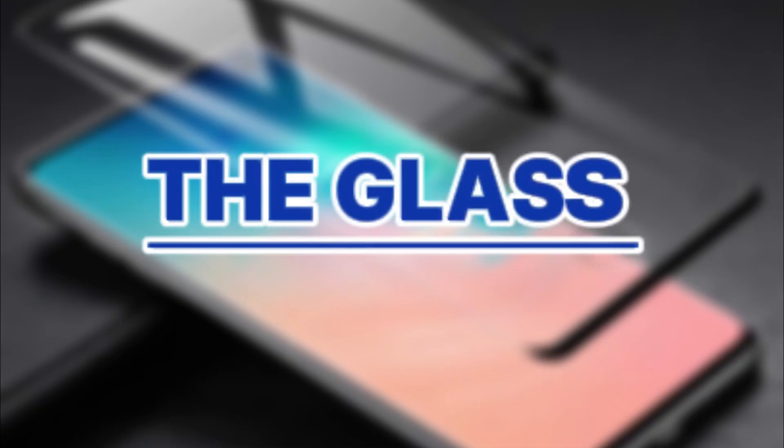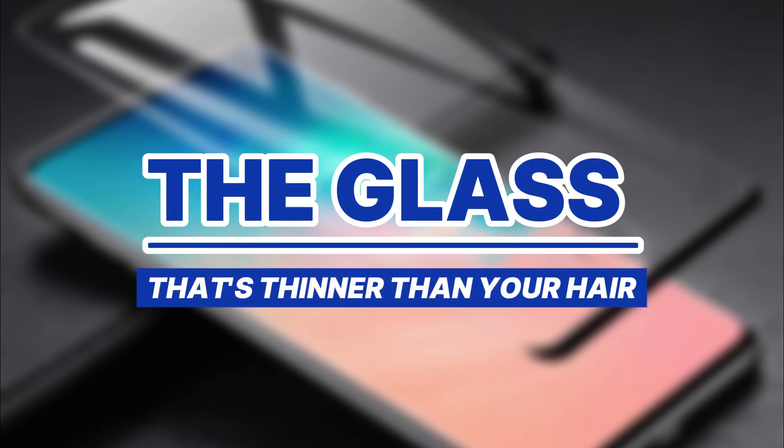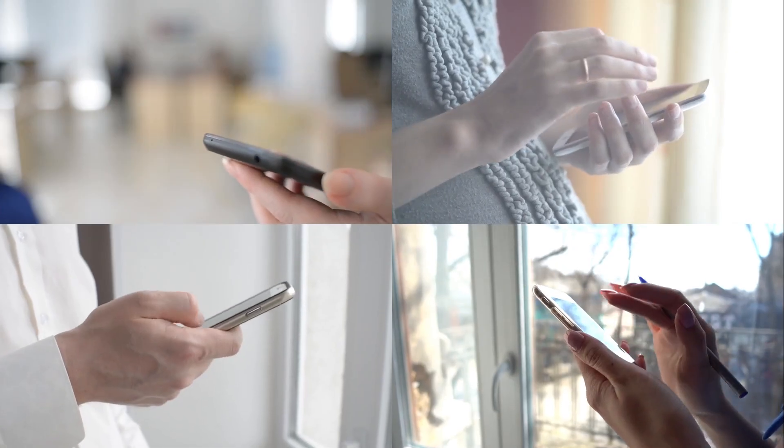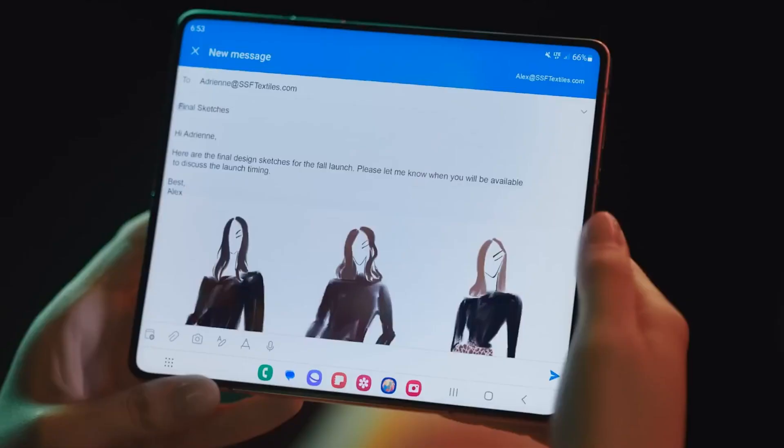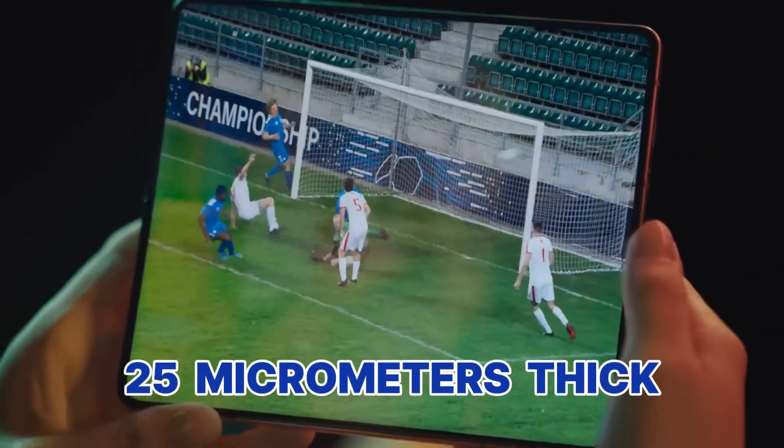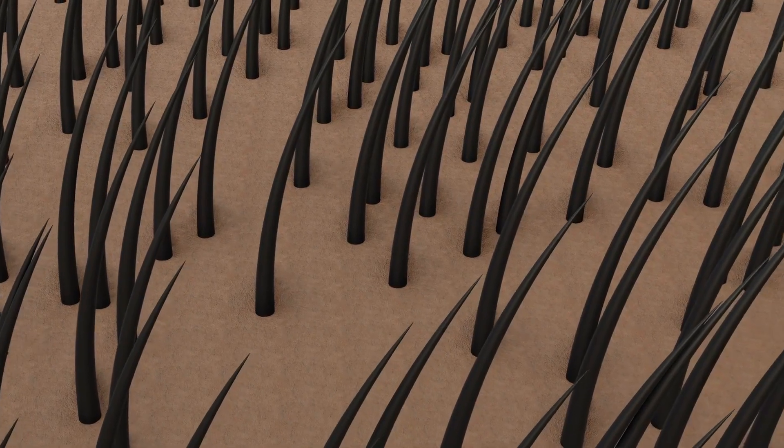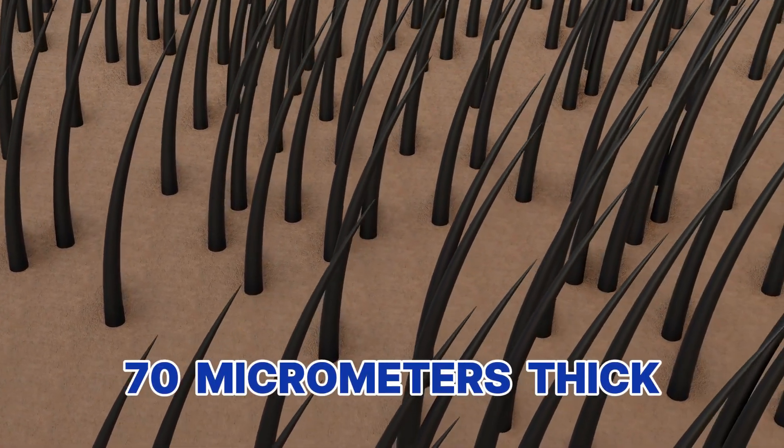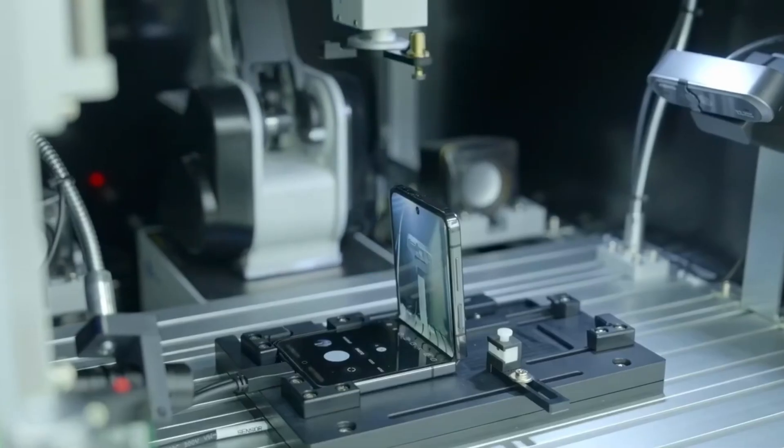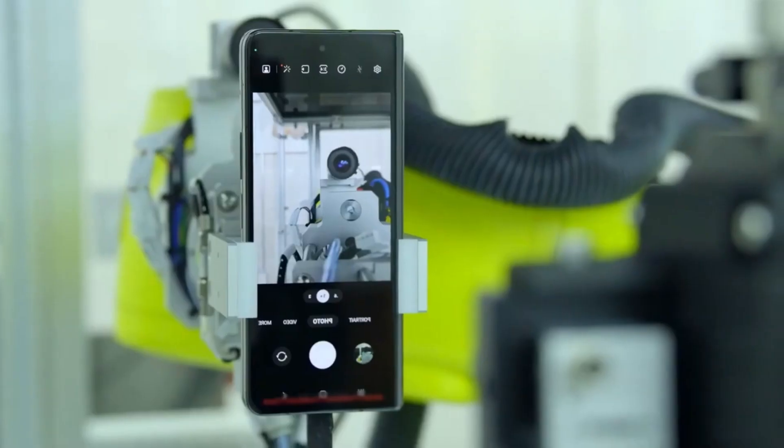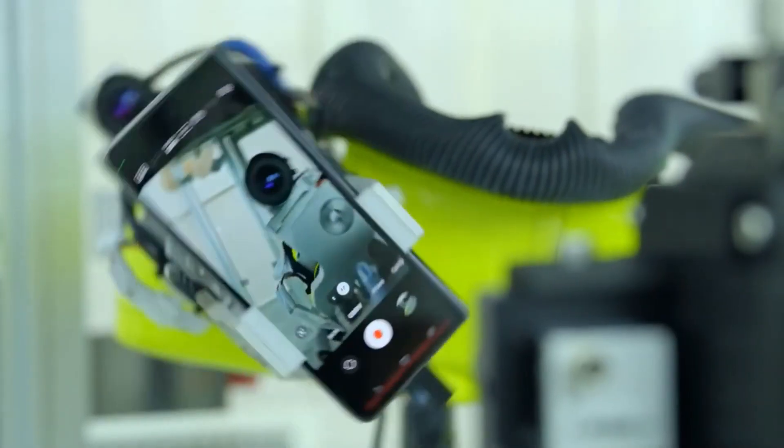Let's talk about something that will make you look at your phone screen differently forever. That foldable display on the Galaxy Fold? The glass is only 25 micrometers thick. To put that in perspective, a human hair is about 70 micrometers thick. Samsung is literally folding glass that's thinner than your hair, and it can do this 300,000 times without breaking. How is this even possible?